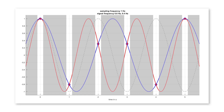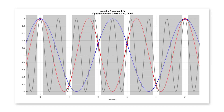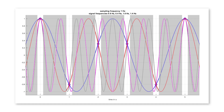There exist many more such frequencies. For example, 1.6 or 1.4 Hz — you see them here with different colors. They all share the property that we get exactly the same value at all sampling instances. There are infinitely many more high signal frequencies for which this is the case. So this illustrates that only up to the Nyquist frequency — half the sampling frequency — can a signal be reconstructed exactly.